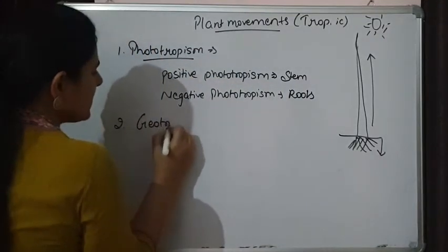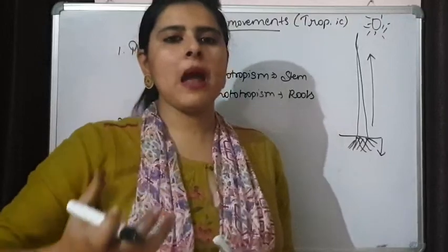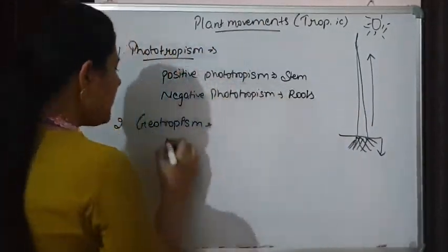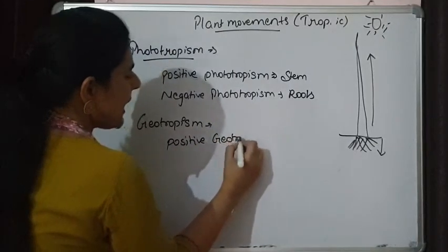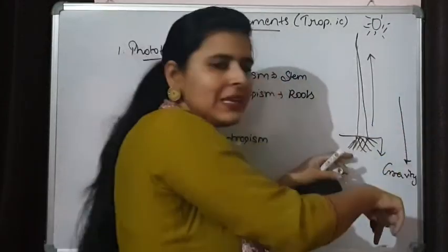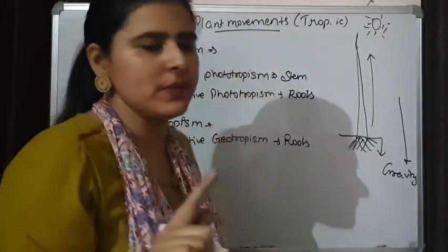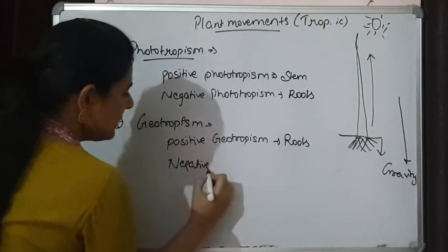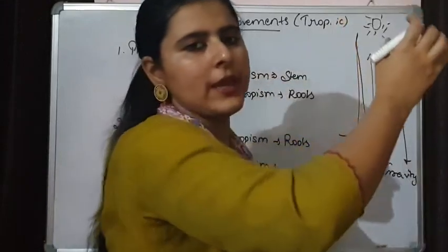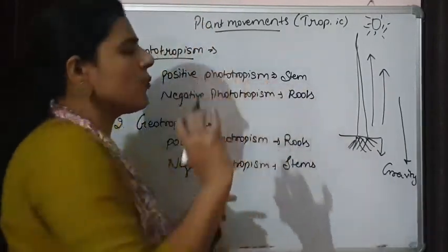The second tropic movement is geotropism. Geotropism means gravity is the stimulus. Plant parts move in respect to gravity — this is opposite to phototropism. Positive geotropism means movement in the direction of gravity. Roots move downward in the direction of gravity, so roots show positive geotropism, but negative phototropism. Negative geotropism is shown by stems, because they are growing opposite to the direction of gravity, so stems show negative geotropism but positive phototropism.